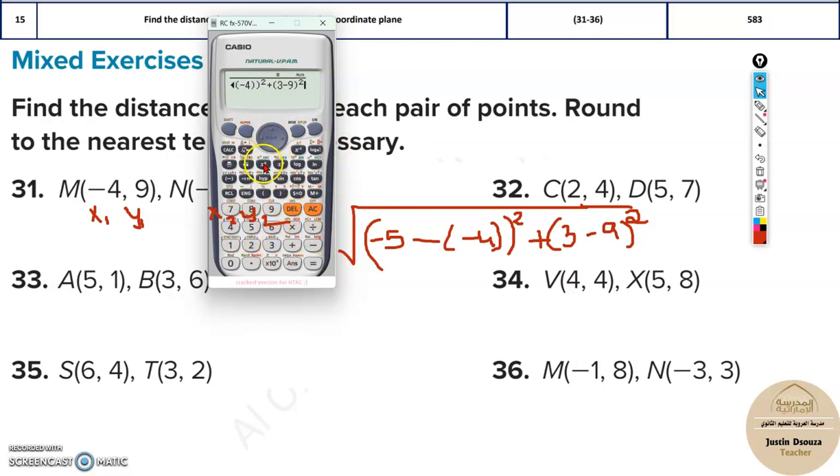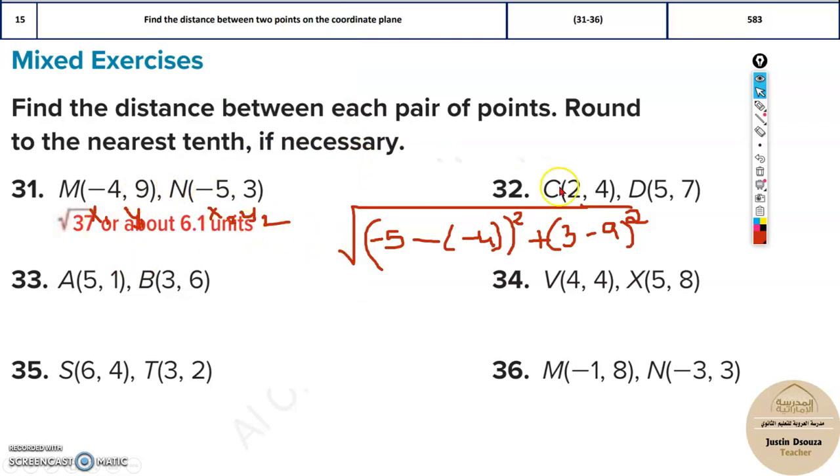So, then over here, it's squared. And that's it. The answer is square root 37. That is just over 6. So, 6.1 units.